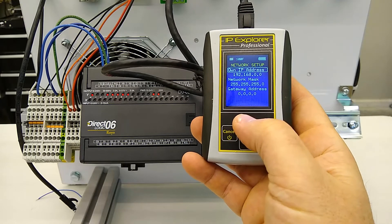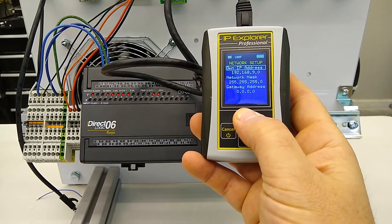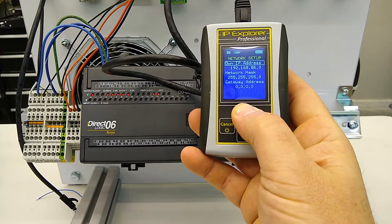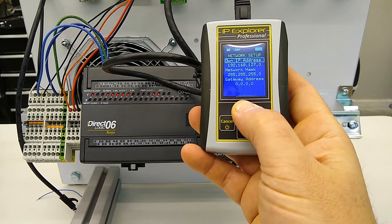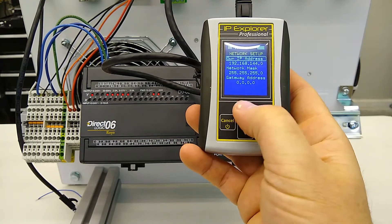When you first power up the IP Explorer, you'll need to configure its IP address. So I'm going to set it for 192.168.144.0, and the default subnet of 255.255.255.0 will work fine.